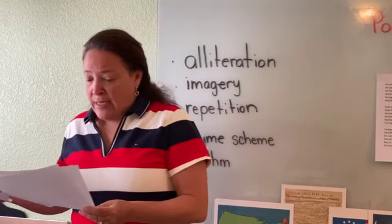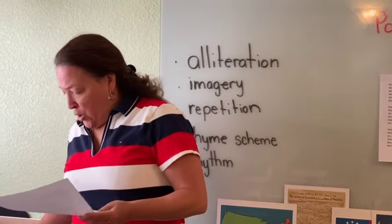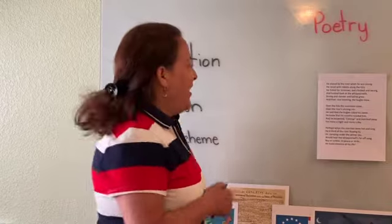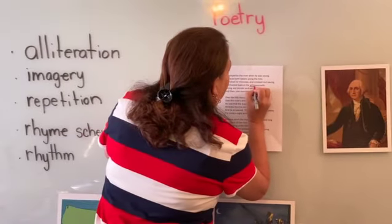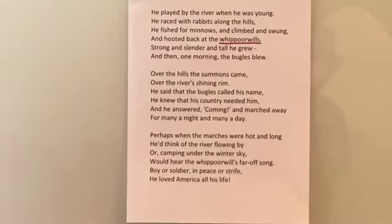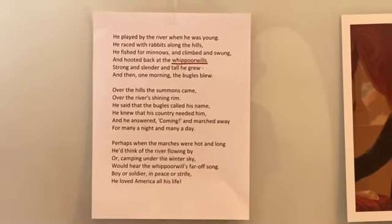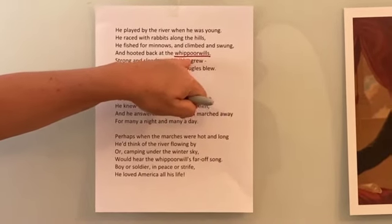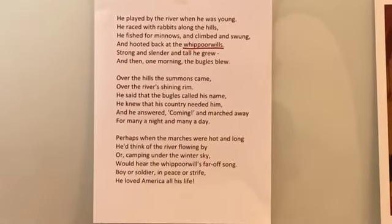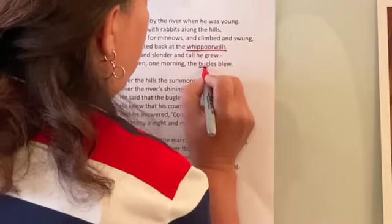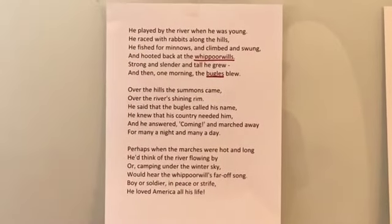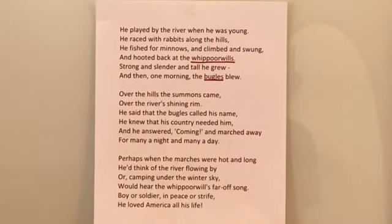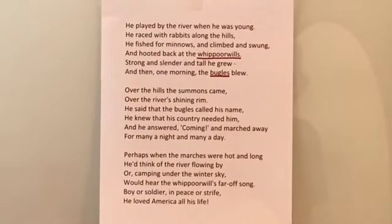I want to draw your attention, boys and girls, to a couple of words that we have to know before we read the poem. The first word is a whippoorwill. A whippoorwill is a kind of bird that makes a beautiful sound. If you can, today I want you to go Google it and see if you can find the sound it makes. And then the bugles — a bugle is a horn. So those are two words that are important to know today in the vocabulary. Before we get to finding the alliteration, the imagery, the repetition, the rhyme scheme, and the rhythm, I'd like to read the poem first.